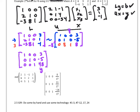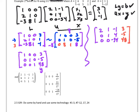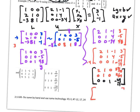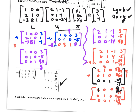Now solve UX = Y. Divide the last row by 34. Then multiply to eliminate upper entries: multiply by -1 to get 16/17, giving x2 = 11/17. Divide the first row by 2, giving x1 = 8. Here's the final answer, verified with technology.